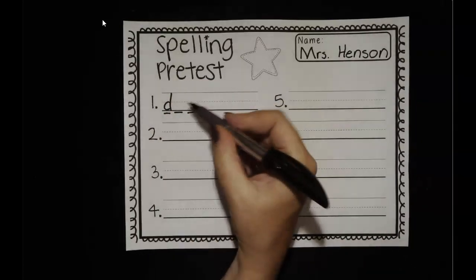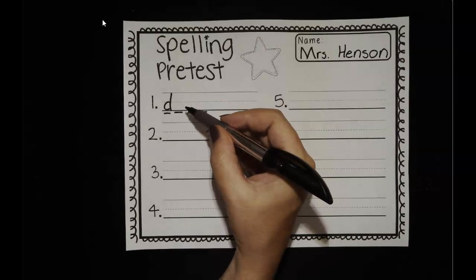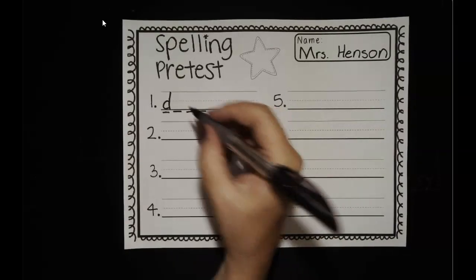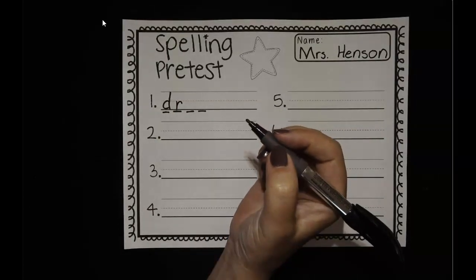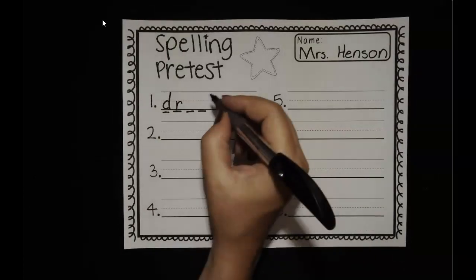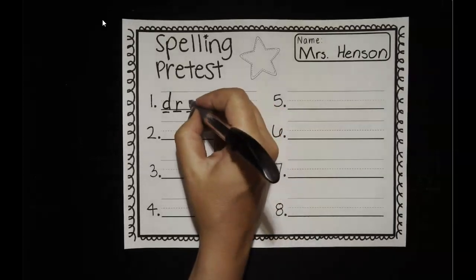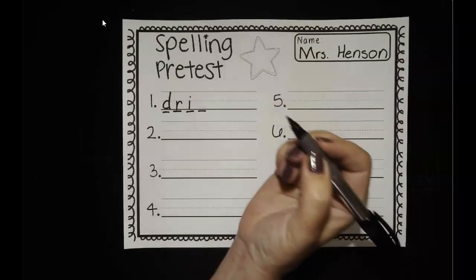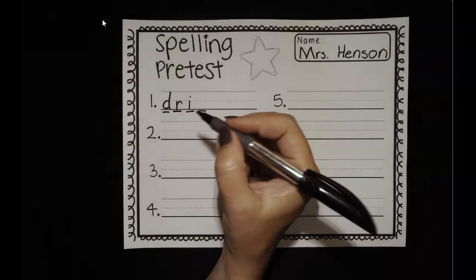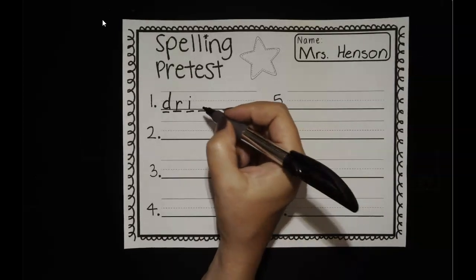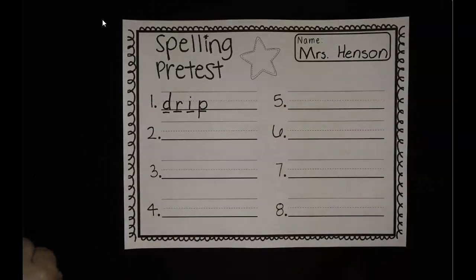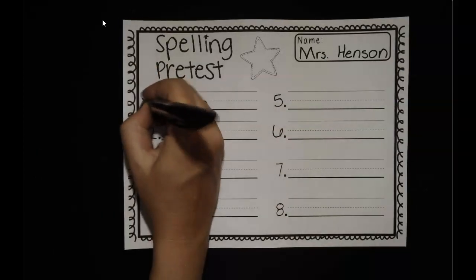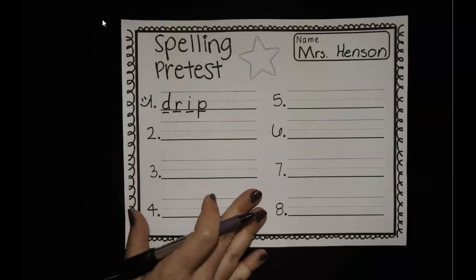What do we hear next? 'Ur.' What letter says 'ur'? R. Very nice. 'Dur, ih.' What's that 'ih' sound? I, like 'ih,' itchy. Good. And what would be last? I heard that P at the end — 'dur, rip.' Good. Put a smiley face by that. Nice job sounding that out with me.